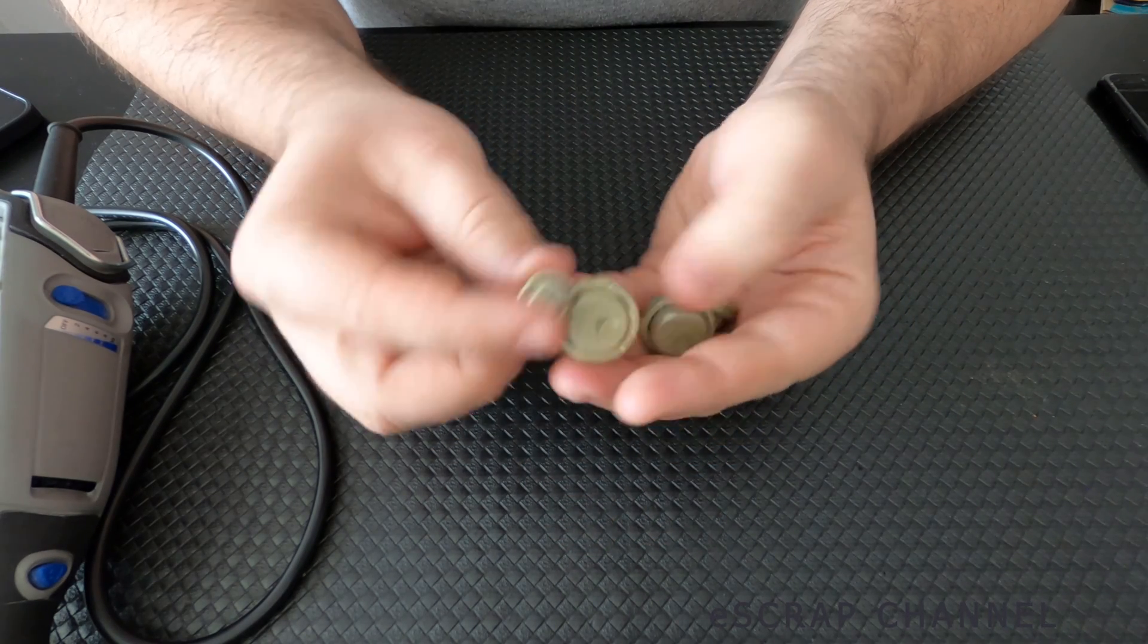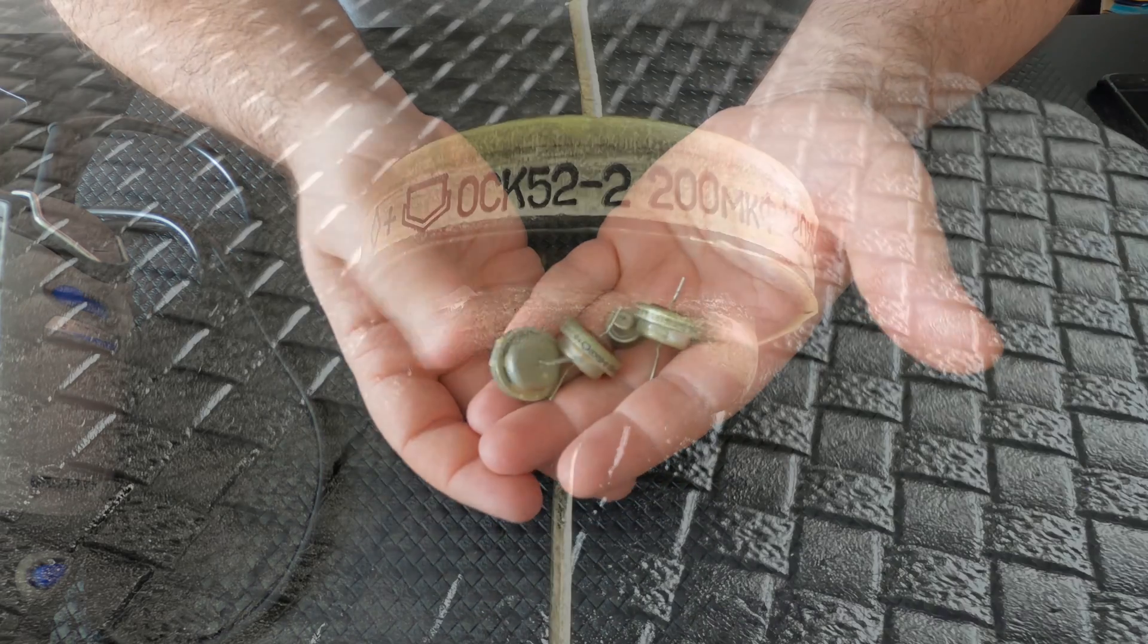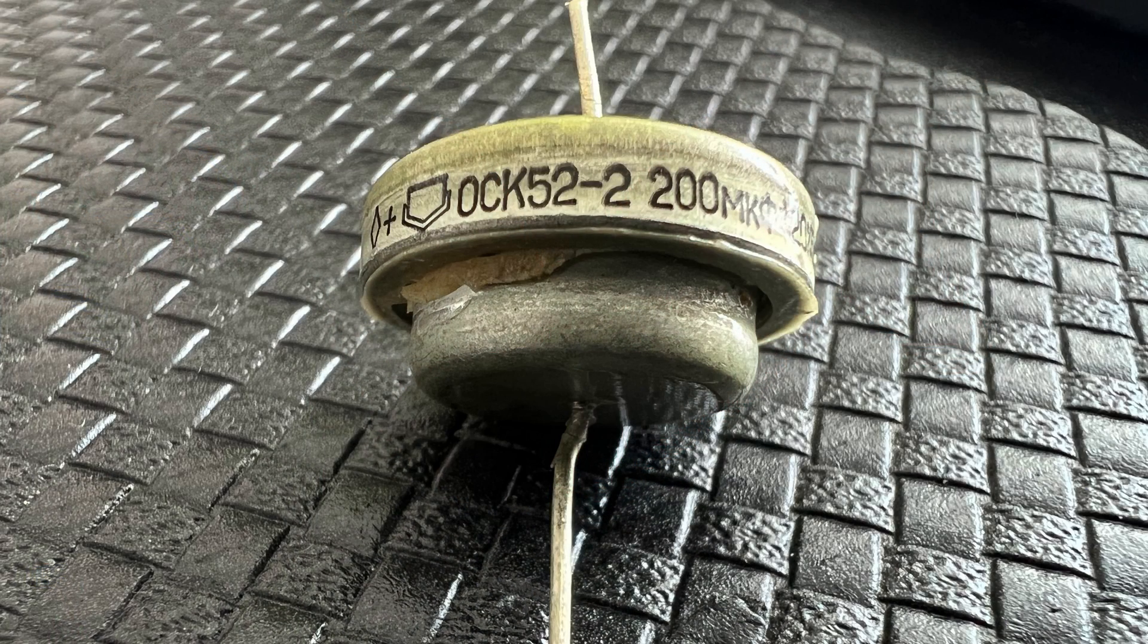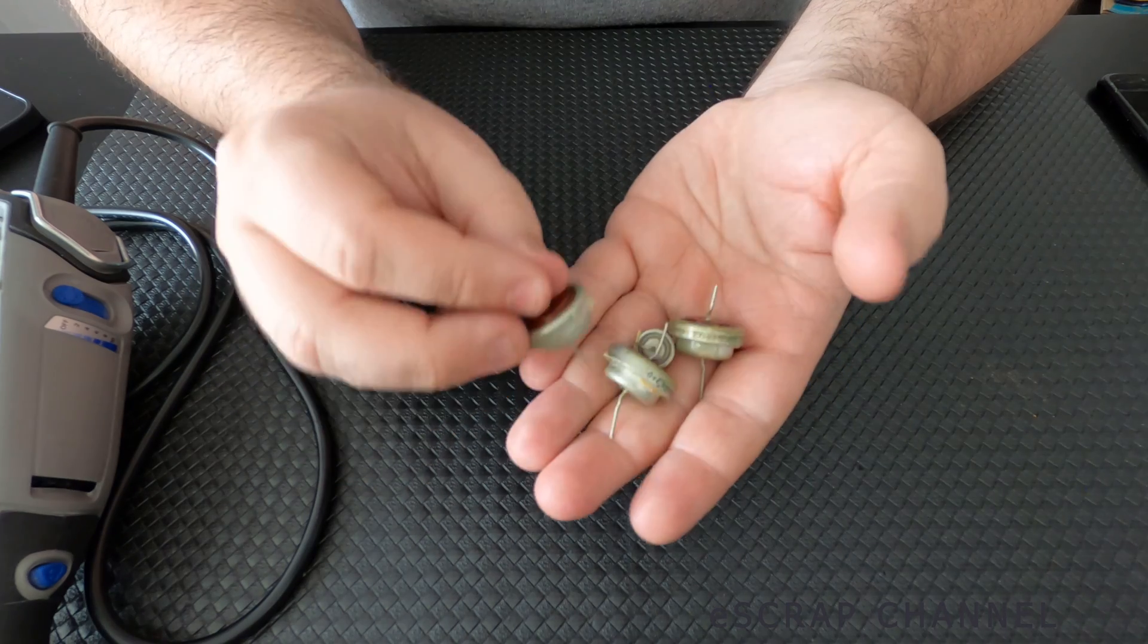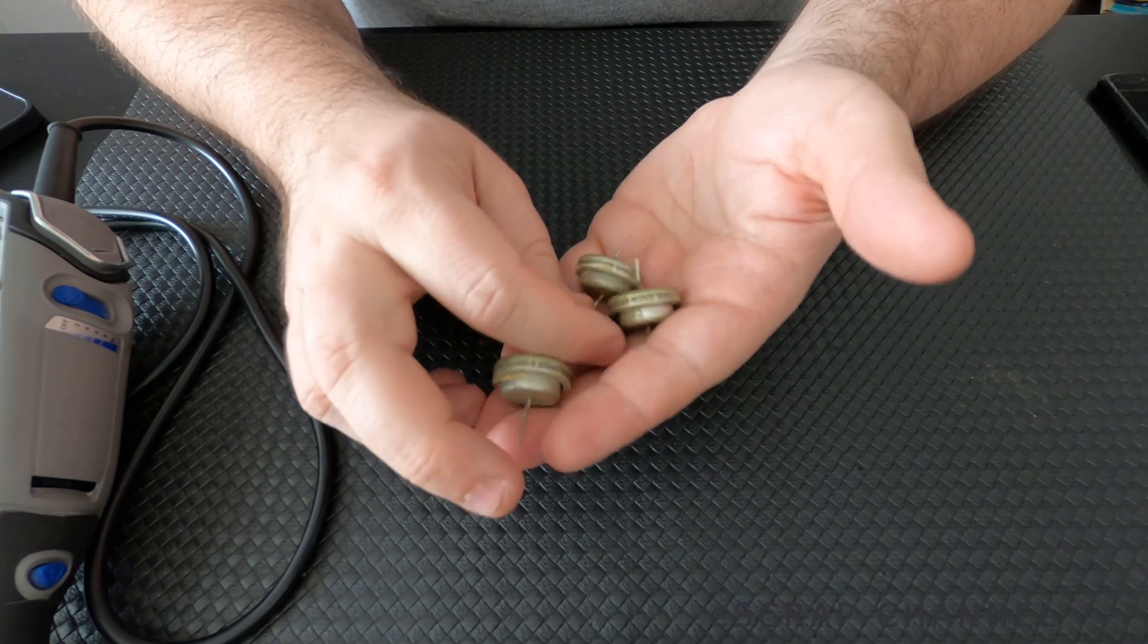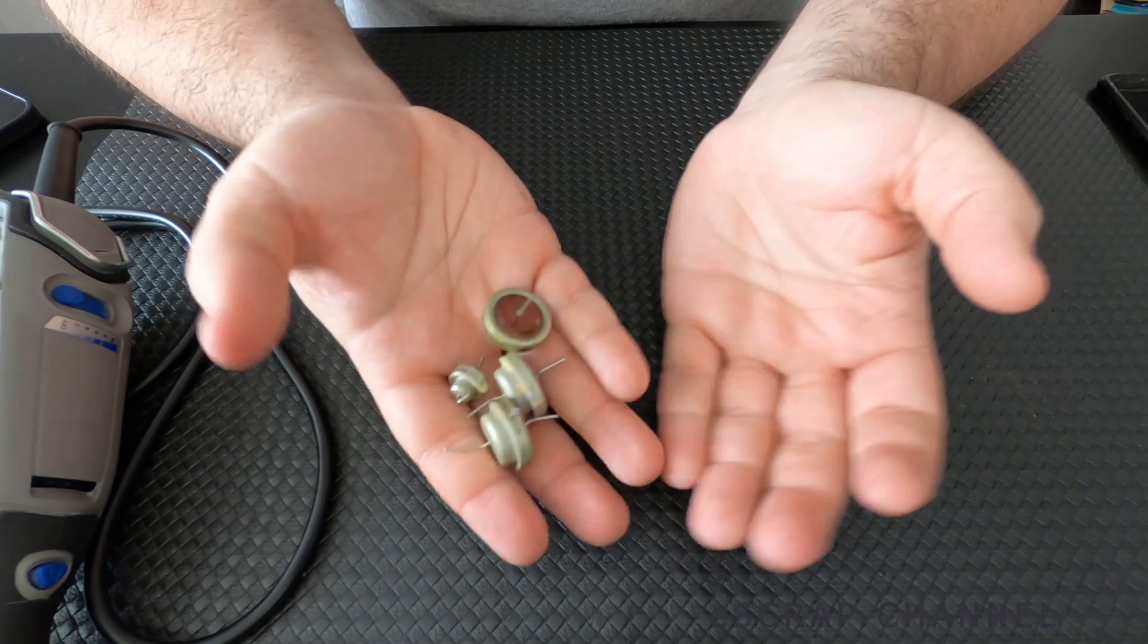Two different sizes I have. But besides the tantalum inside, these capacitors also contain copper, silver or silver palladium cup. When I scrap them I'll show you this cup and we'll test together to see if it's made of silver or silver palladium. If it's copper it'll be visible.